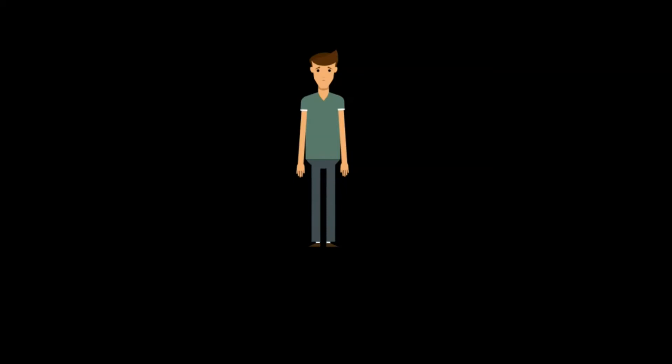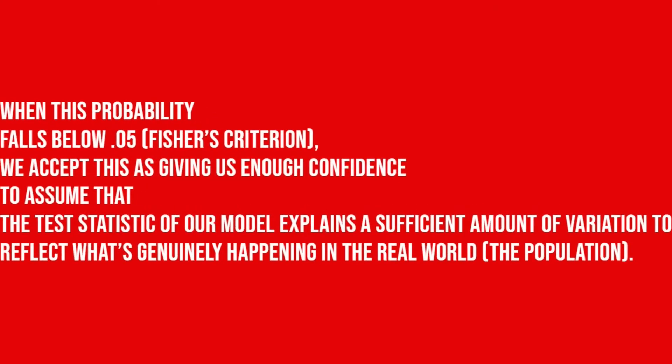Now finally I have a question: how and why does 0.05 or 5 percent significance criteria work in statistics? When the probability falls below 0.05, we accept this as giving us enough confidence to assume that something is genuinely happening in the real world.